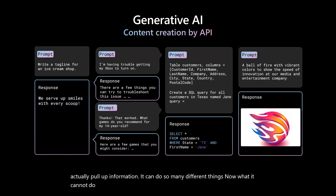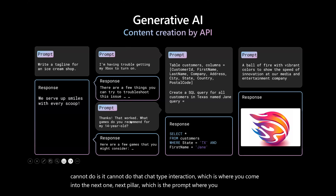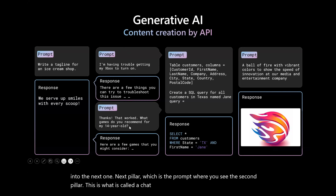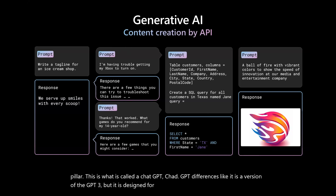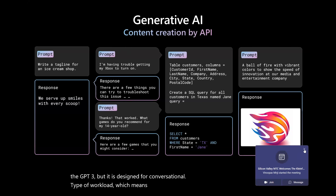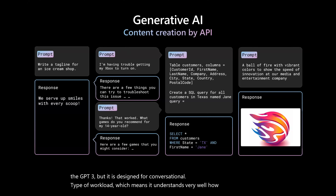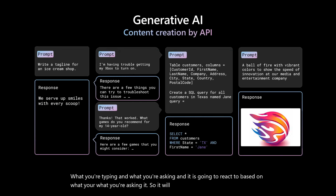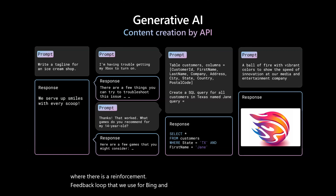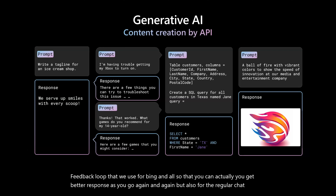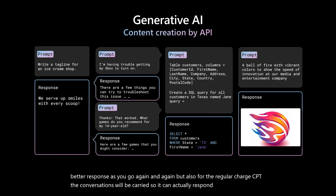What DaVinci cannot do is that conversational chat-type interaction — that's where you go to the next pillar, ChatGPT. ChatGPT is a version of GPT-3 designed for conversational workloads, which means it understands very well what you're typing and asking, and it reacts based on that. It understands context, and there is a reinforcement feedback loop used for Bing so you get better responses. The conversations are carried, so it can respond based on the ongoing context.